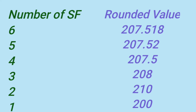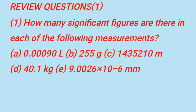Rounding example: 210. The 8 is replaced by a 0 and rounds the 0 up to 1. Result: 210. 1 significant figure: 200 — the 1 is replaced by a 0.